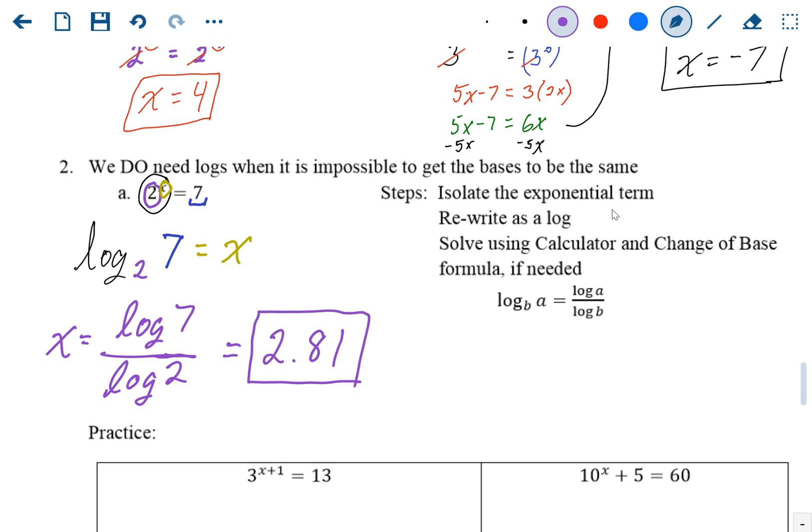And you can check your answer, because the answer to the logarithm is the exponent that makes the base equal to the argument. So 2 raised to the 2.81 power should give you 7.